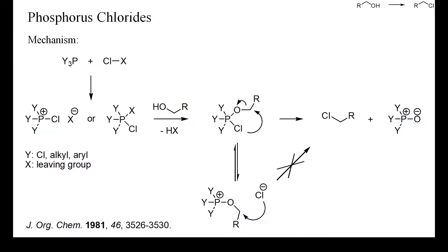Trialkyl phosphites cannot be used in this reaction, because their chlorination would immediately yield the corresponding alkyl chlorides. Some instances of reactions using triphenyl phosphite, though, have been reported, but aryl ethers can result as by-products.